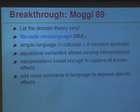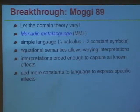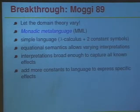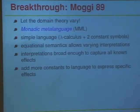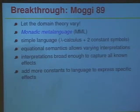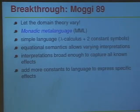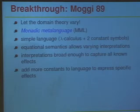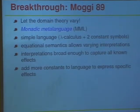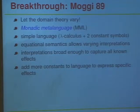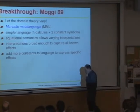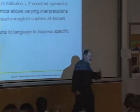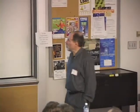The turning point was in 1989 when Moggi introduced the idea of monads. Moggi's brilliant idea was: don't worry so much about the domain theory — let the domain theory vary. What he called the monadic metalanguage was very simple, unlike the complicated things from the previous slide. It was a simple language: a lambda calculus plus exactly two additional constant symbols, with an equational semantics. The rule was: any model that satisfied those equational semantics was okay. You could put anything underneath it, and depending on what else you wanted, you could put different models underneath. Moggi showed that the interpretations were broad enough to capture all the effects that anyone could think of at that time.